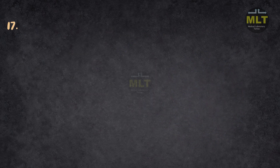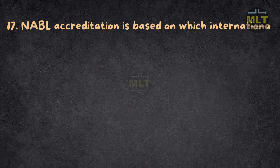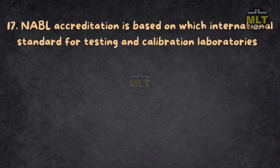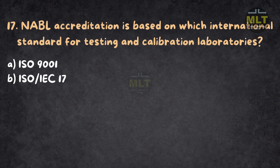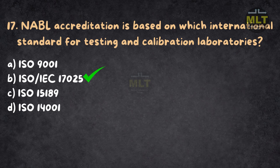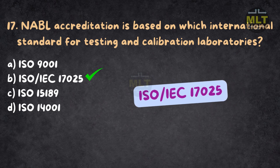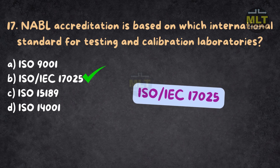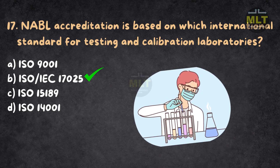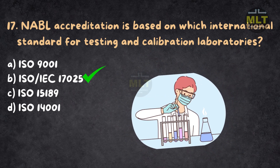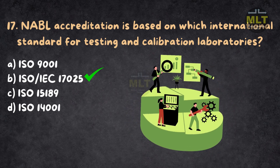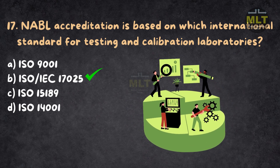Question 17: NABL accreditation is based on which international standard for testing and calibration laboratories? a. ISO 9001. b. ISO/IEC 17025. c. ISO 15189. d. ISO 14001. Correct answer: b. ISO/IEC 17025. ISO/IEC 17025 applies to testing and calibration laboratories. Medical labs specifically follow ISO 15189, while ISO 9001 is for general quality management.